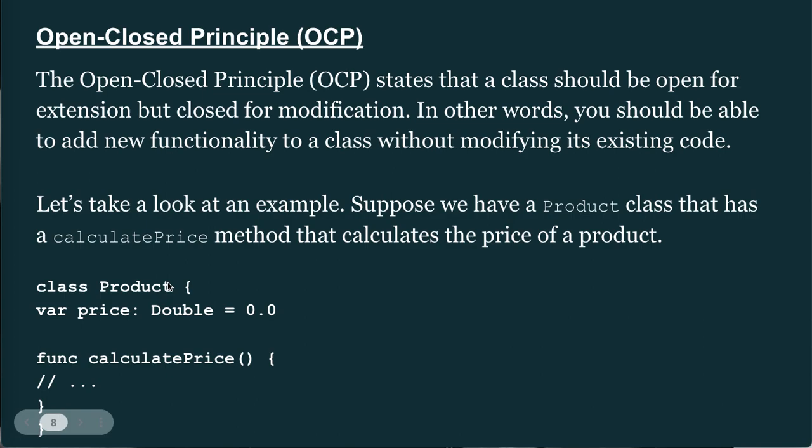Moving on to the Open Closed Principle (OCP). OCP states that a class should be open for extension but closed for modification. In other words, you should be able to add new functionality to a class without modifying its existing code.